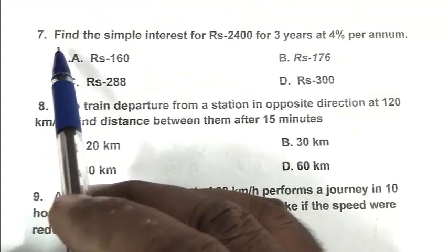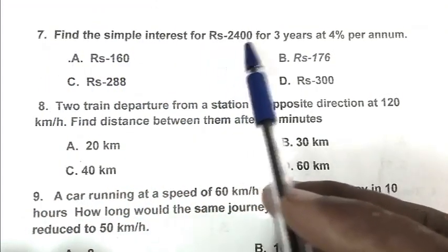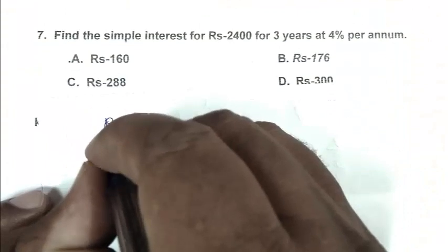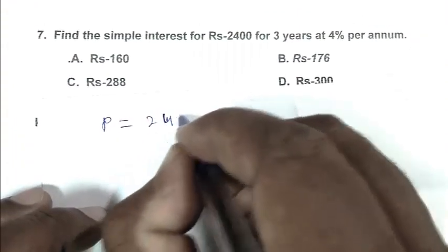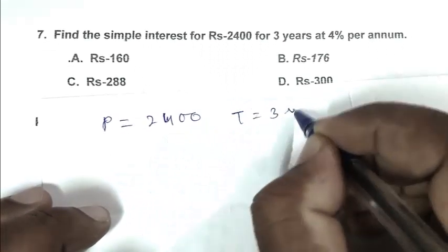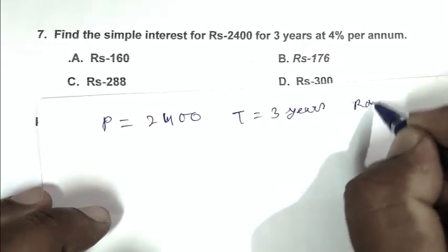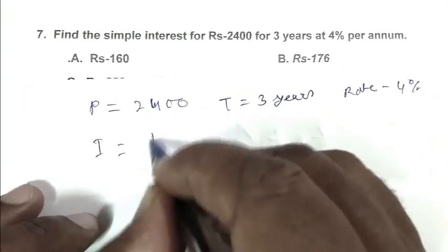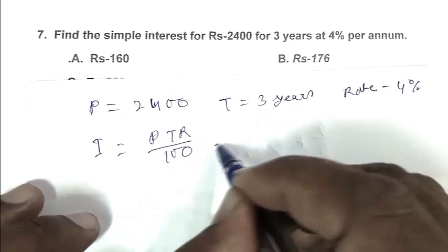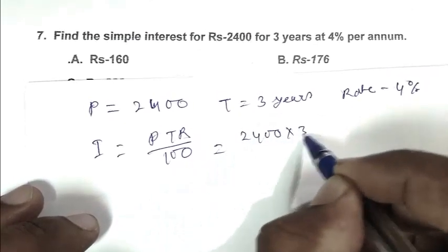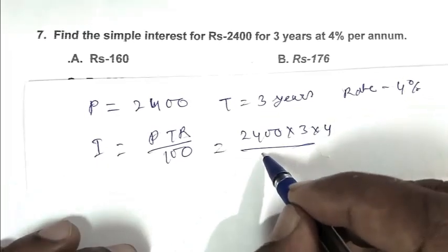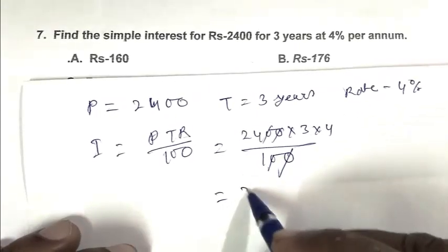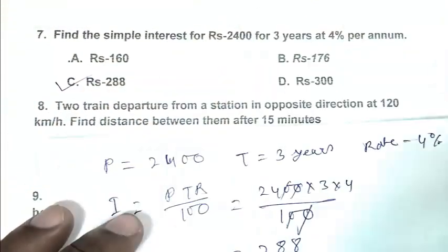Question number 7: Find the simple interest for Rs. 2400 for 3 years at 4% per annum. So friend, here principle is 2400, time is 3 years, rate is 4%. Interest equals PTR by 100, which is 2400 multiplied by 3, multiplied by 4, divided by 100. That's 288. So C is the right answer.